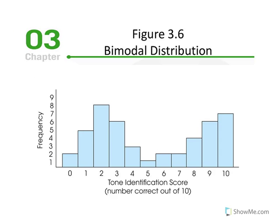Here's an example we refer to as bimodal. If it's bimodal, we have two x values that have the highest frequency. This research is looking at total identification scores — the ability of someone to recognize tone or pitch of a sound — with frequency on the ordinate and x values on the abscissa. If asked to report the mode, we look for the highest peak, because the mode is defined by the value with the highest frequency. This value here has a frequency of 8.